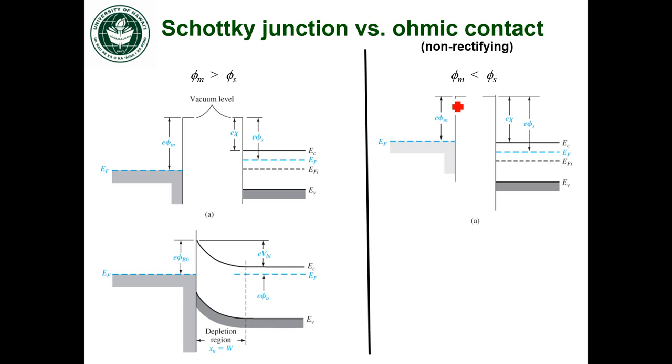So that band diagram before the materials are put into contact looks like this. So the metal work function is less than the semiconductor work function. That means when I put the materials into contact, I'm going to have electrons flowing from the metal into the semiconductor. So the opposite from our Schottky junction case.